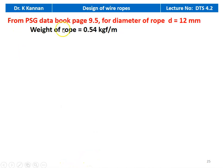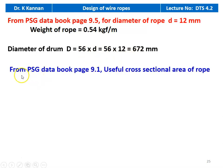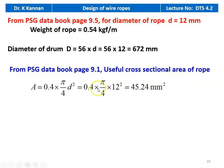From the PSG design data book page number 9.5, for diameter of the rope D equal to 12 millimeter, weight of the rope equals 0.54 kilogram force per meter. The diameter of the drum equals 56 into D, that is 56 into 12 equal to 672 millimeter. From PSG data book page number 9.1, the useful cross section of the wire rope A equal to 0.4 into 5/4 into D squared, so 0.4 into 5/4 into 12 squared equal to 45.24 millimeter square.